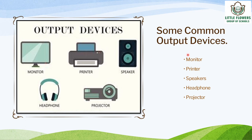Here are some output devices. First is the monitor. A monitor looks like a television and is also known as a Visual Display Unit. The monitor shows the data you input and its result as output after the computer processes it. Next is the printer. A printer is used to print the result of work done by the user on paper. We can print documents, drawings, and images in black and white as well as in color. There are two types of printer: a laser printer and an inkjet printer. A laser printer uses a laser beam to print the hard copy, while an inkjet printer sprays ink on paper to print the hard copy.